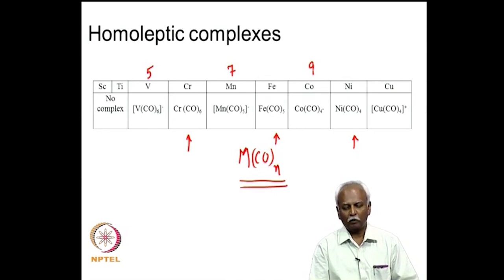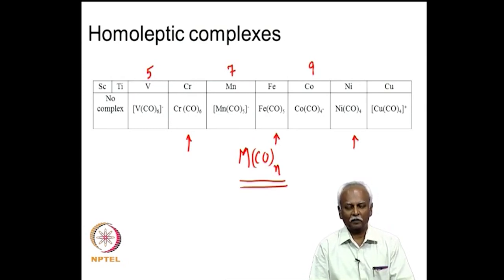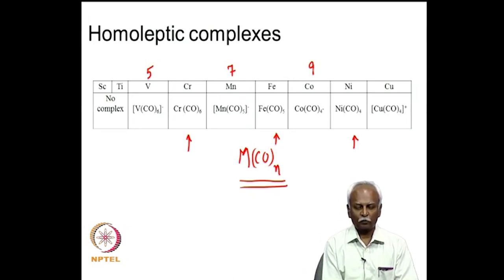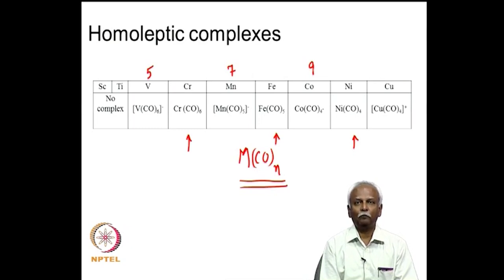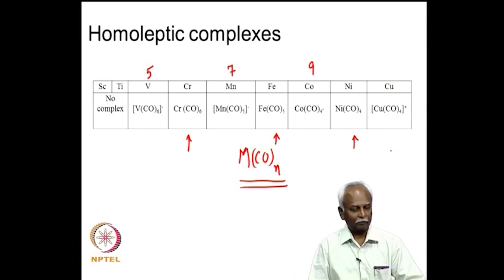Systems with an odd number of electrons tend to form charged complexes. If you go to classical coordination chemistry, metals are usually found in positive oxidation states. But surprisingly, here there is a tendency to form negatively charged complexes — the net charge is minus 1 in many cases. Since carbon monoxide is neutral, the metal must be in a negative oxidation state, which is unusual since metal is generally considered an electropositive element. This is one of the first factors to consider in transition metal carbonyl chemistry.